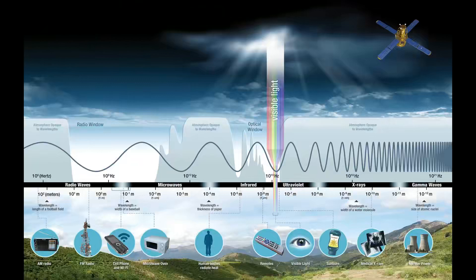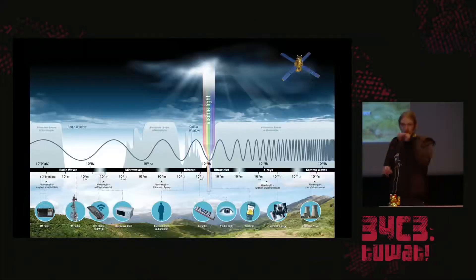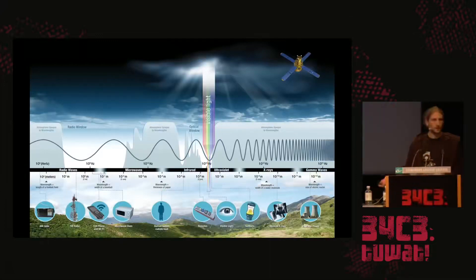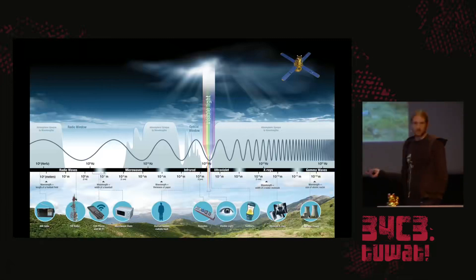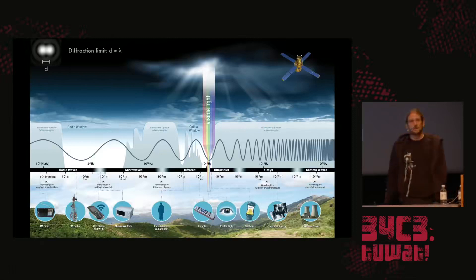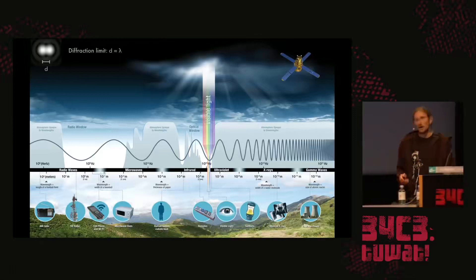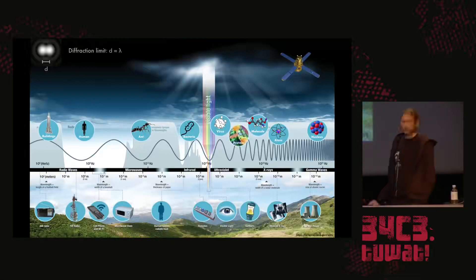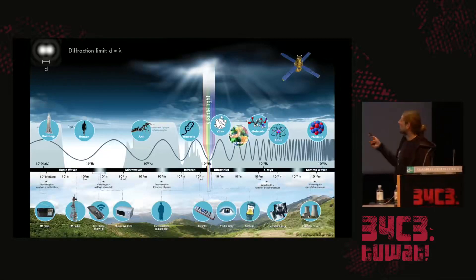To bring everyone on the same page, let me recall the electromagnetic spectrum. We are surrounded by electromagnetic waves categorized by wavelength: radio waves with meters, microwaves with centimeters, infrared and visible light with hundreds of nanometers. If we decrease the wavelength further we get to ultraviolet, and finally at 0.1 nanometer or 1 angstrom, we have X-rays. There is a fundamental limitation called the diffraction limit: to resolve two objects at distance d, you need a wavelength on the order of d or smaller. So to study viruses, proteins, or smaller molecules, we have to use X-rays.